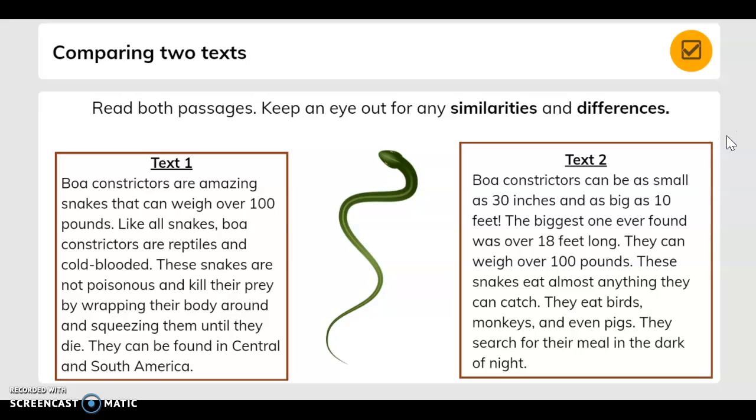Text 2. Boa constrictors can be as small as 30 inches and as big as 10 feet. The biggest one ever found was over 18 feet long. They can weigh over 100 pounds. These snakes eat almost anything they can catch. They eat birds, monkeys, and even pigs. They search for their meal in the dark of night.